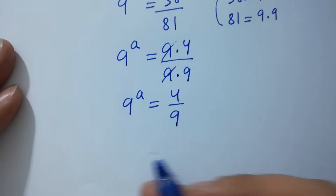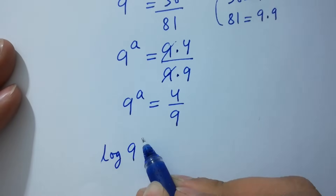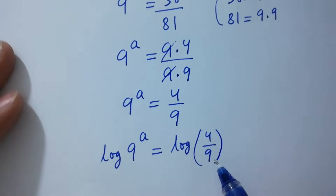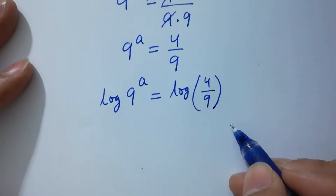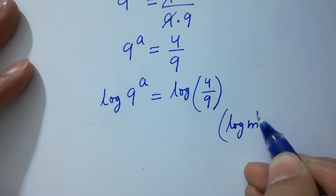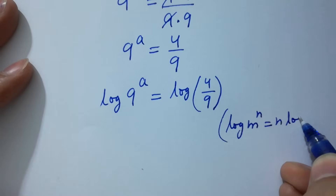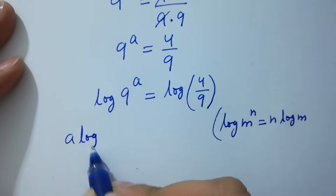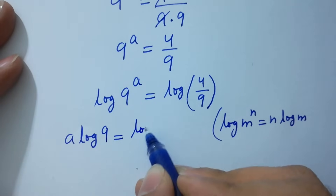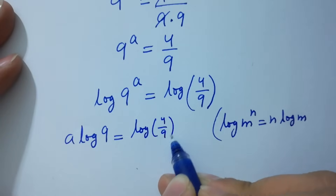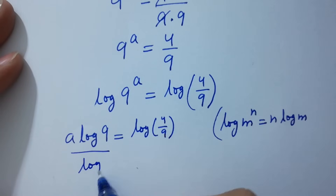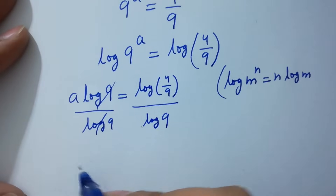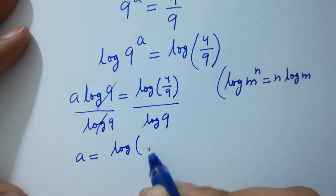Take log on both sides: log(9 to the power a) equals log(4/9). As log(m to the power n) equals n·log(m), it will be a·log 9 equals log(4/9). Divide by log 9 on both sides; log 9 and log 9 cancel.